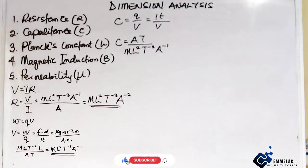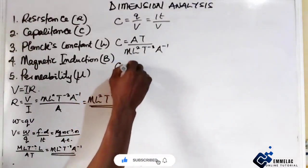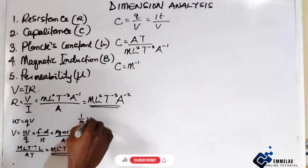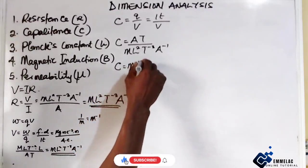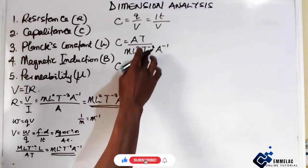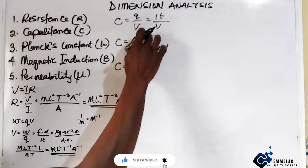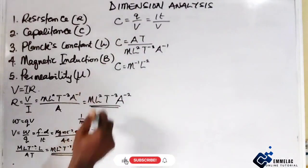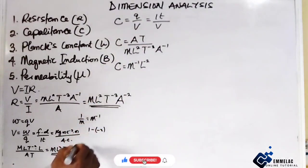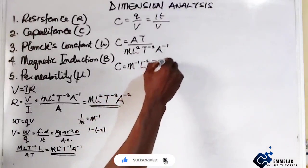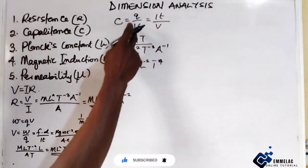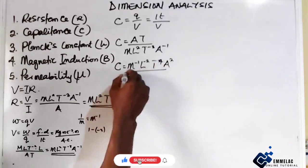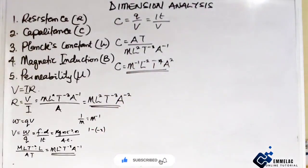Putting everything in index form, C equals M raised to the power of minus 1, because 1 over M gives M to the minus 1. The length becomes L raised to the power of minus 2. For time, 1 minus (minus 3) gives 4, so T raised to the power of 4. For current, 1 minus (minus 1) gives 2, so A raised to the power of 2. This is the dimensional formula for capacitance.